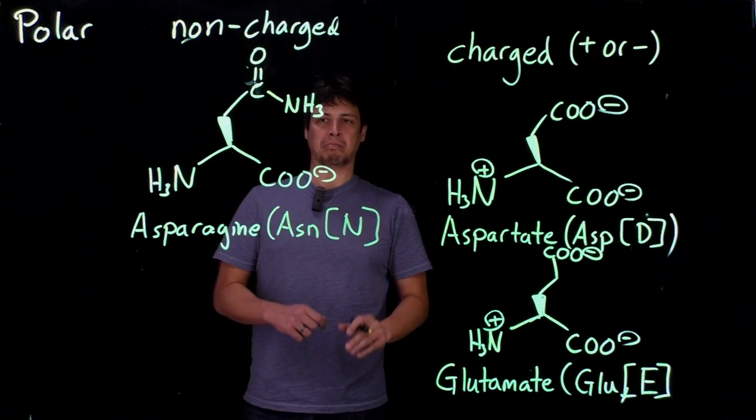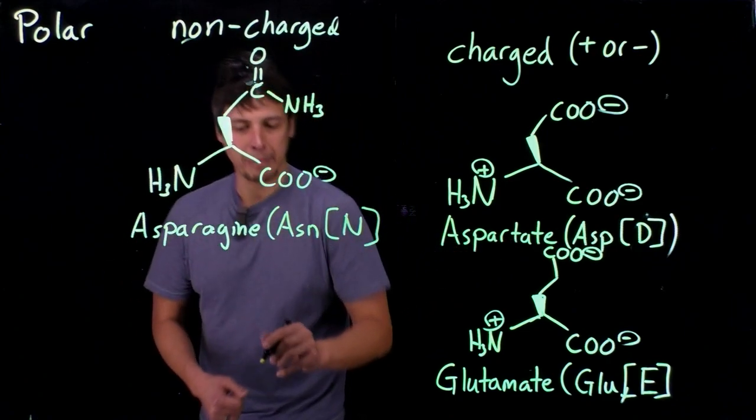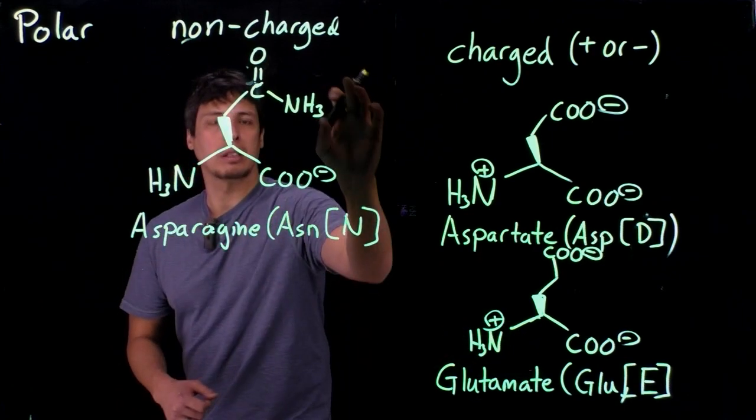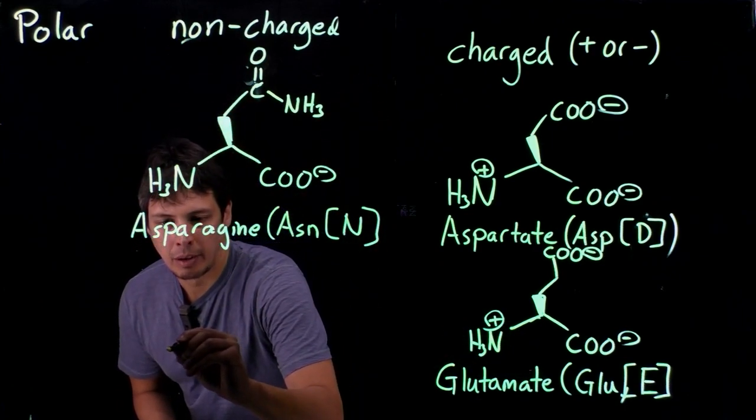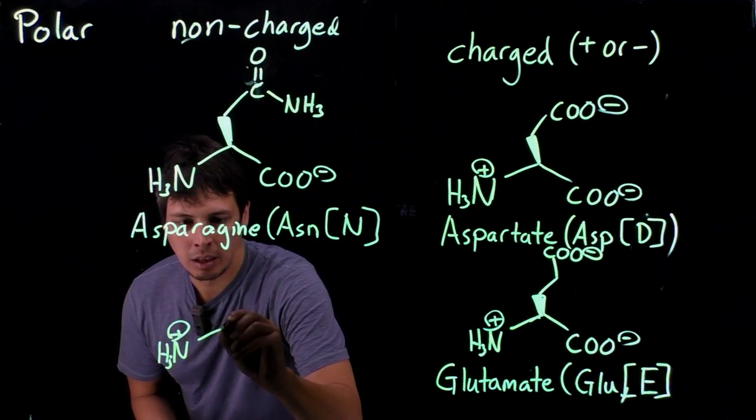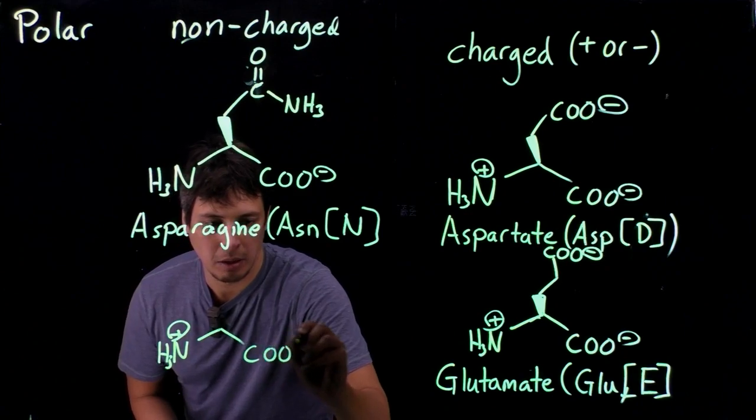And so what's probably the fourth one? That's right. It's going to be in a similar structure of glutamate, except it's going to have this amide. So NH3 plus alpha carbon carboxylate.